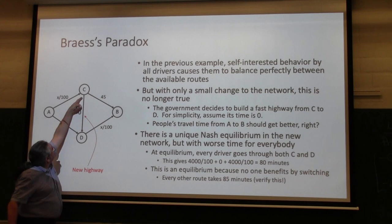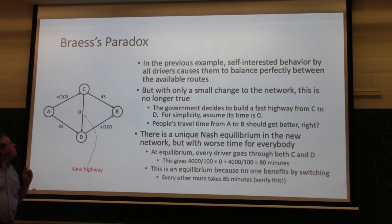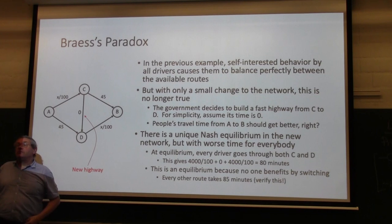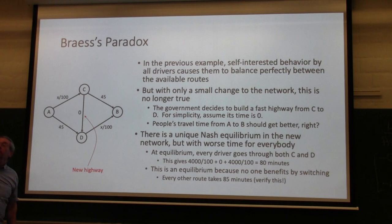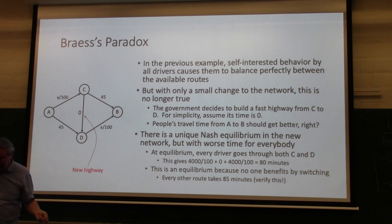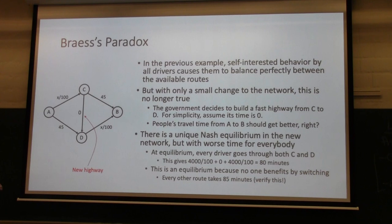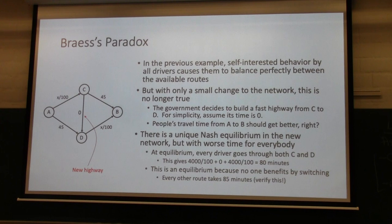The government decides to build a very fast highway going from C to D. Let's say it takes zero time — a simplification that doesn't change the result. So there's now a very fast highway from C to D, and the travel time for people should improve, right? Intuitively, you add a fast road to a network and things go faster. Well, no — it doesn't. In this network, there is now only one Nash equilibrium, and it makes things worse for everybody.